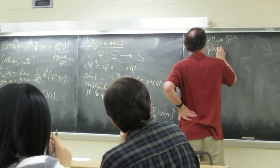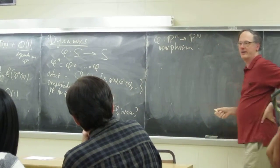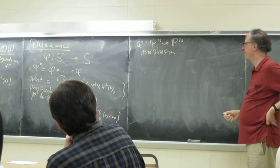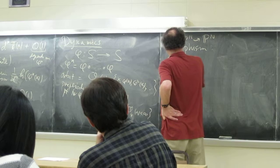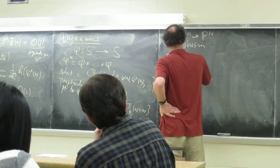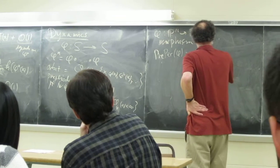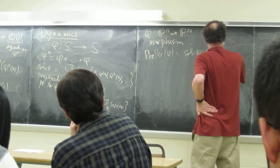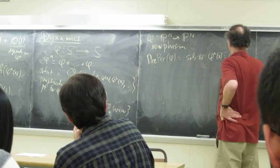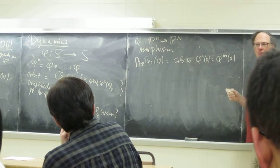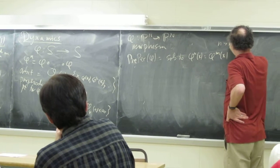And again, I'm going to assume that phi is everywhere defined, so it's a morphism. Then the pre-periodic points will be solutions to phi to the n of x equals phi to the m of x, where n and m are different. The point has to come back eventually and loop around, for some m greater than n.